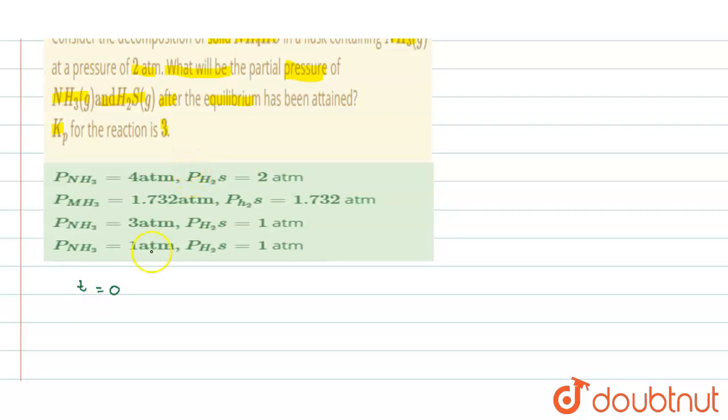At that time, the pressure of ammonia is 2 atm and H2S is 0.